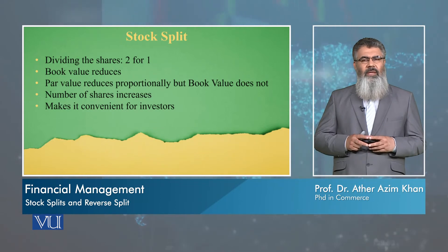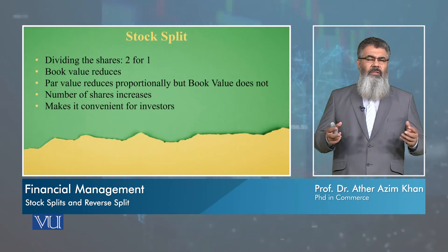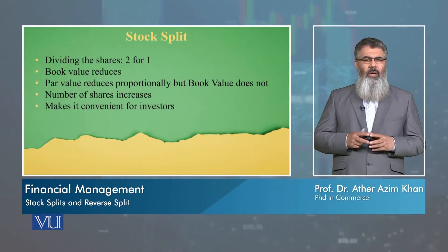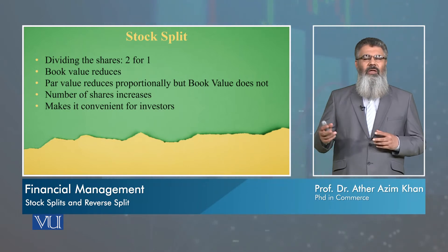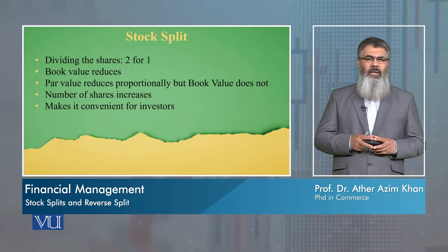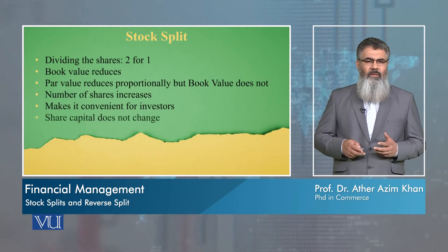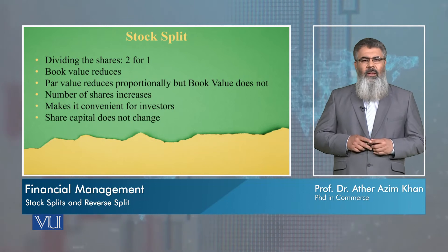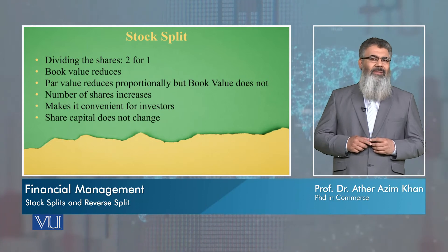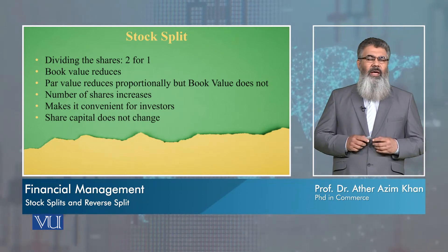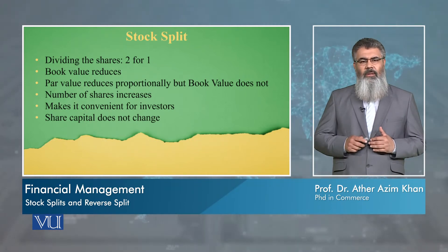For example, if one share has become very expensive in the market — let's suppose it is 500 rupees, with a par value of 10 — then if you split it into 2 shares, one share's value will become around 250, and people will be conveniently able to buy that stock from the market. The share capital amount actually does not change because the par value is reduced and the number of outstanding shares are changed, keeping the share capital constant.